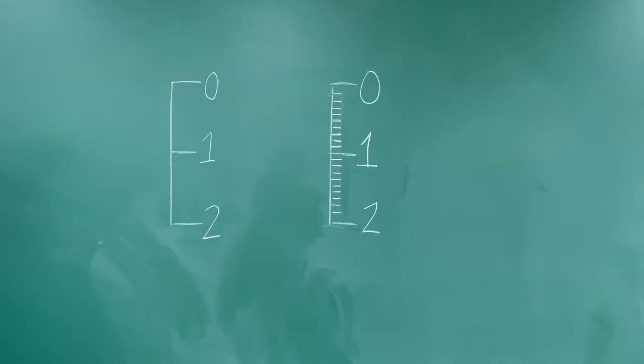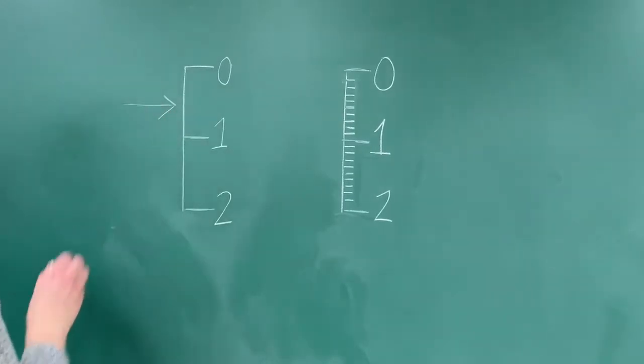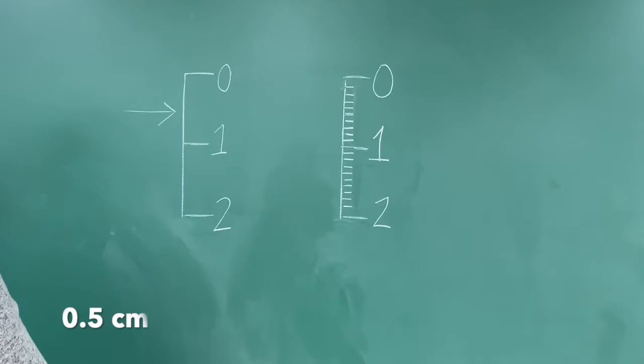Let's assume that the scale on the board is in centimeters. When reading a measurement of an object, often it will fall between the marks. The easiest way to estimate the area between the marks is to think of fractions. One-half is the easiest fraction to see. This would be 0.5 centimeters.